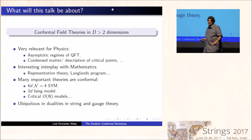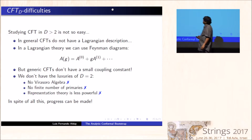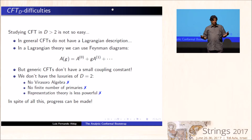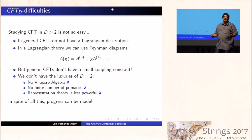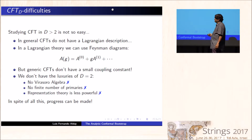The only problem with conformal field theories is that they are a little bit hard to study. For instance, conformal field theories in general do not have a Lagrangian description. If you have a Lagrangian theory, you can in principle compute observables by doing a Taylor expansion around a small coupling constant G, and there is a systematic way through Feynman diagrams to compute these terms. But generic conformal field theories don't even have a small coupling constant. Furthermore, we don't have the luxuries we have in two dimensions — we have no Virasoro algebra, we don't have a finite number of primaries, and in general in higher dimensions representation theory is less powerful.